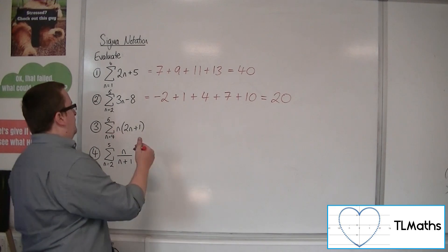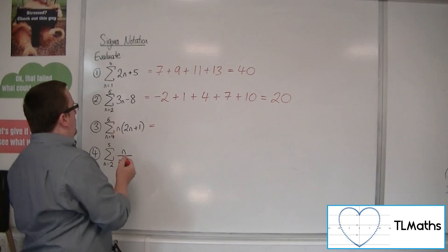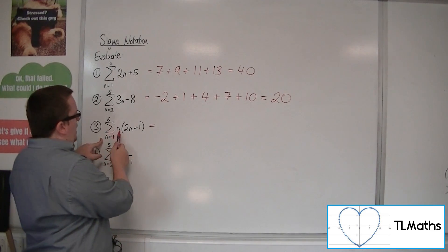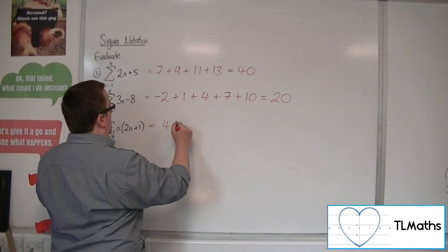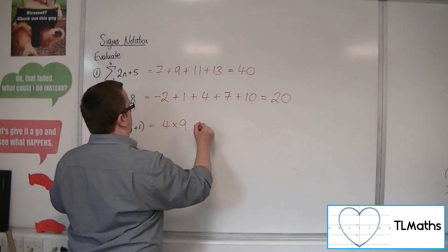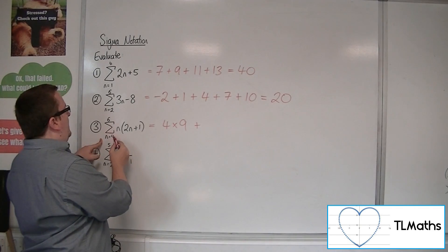Now for number 3, we've got n times 2n plus 1. So starting from n is 4, we have 4 times by 2 lots of 4 plus 1. So that's 9 plus, when n is 5,